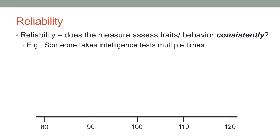Let's say we're measuring someone's intelligence on an IQ test. In most IQ tests, the average intelligence score is 100, and then anything above that indicates high intelligence, anything below that means lower intelligence.